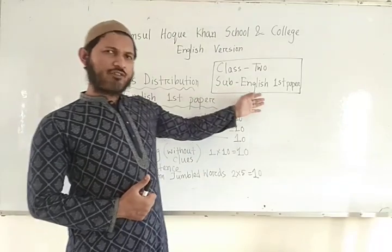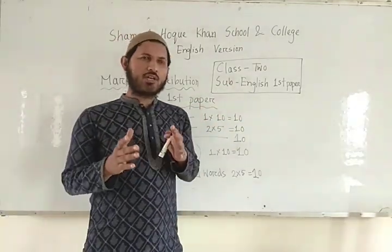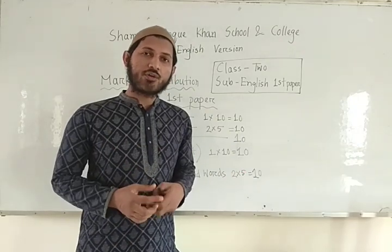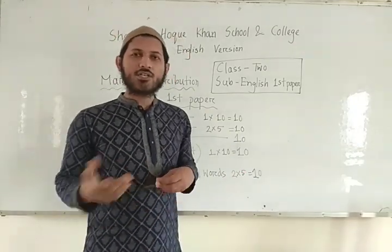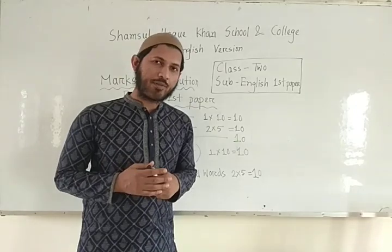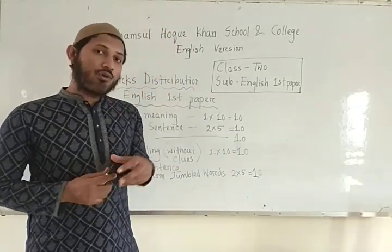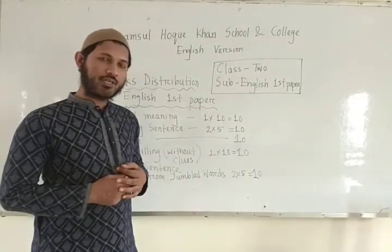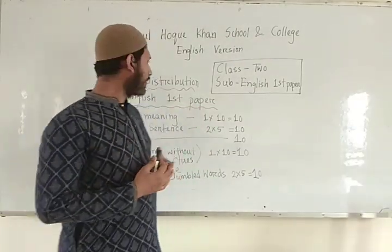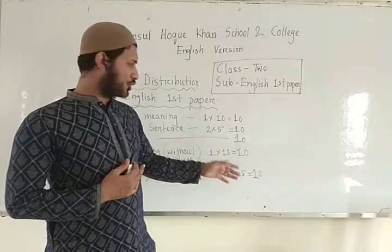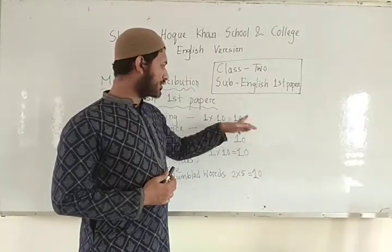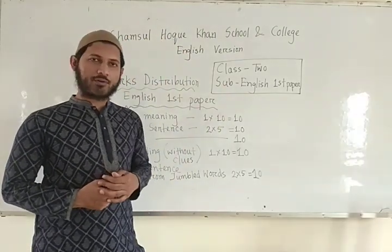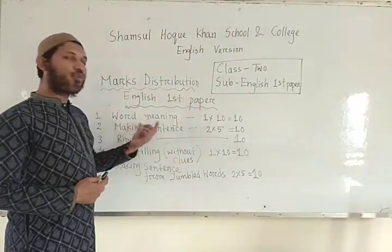From English first paper — you know that in Class 2 there are two papers: English first and English second. We are dealing with English first paper, and other teachers are dealing with English second paper. Now we discuss about English first paper marks distribution. In the exam there are 50 marks totally — 10, 10, 10, 10, 10 — that is a total of 50 marks from English first paper.